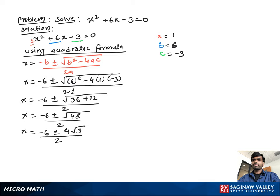As you see, we can take 2 as a common factor from both the numerator terms. So taking 2 as common, we get negative 3 plus or minus 2 times square root of 3, over 2. As you see, 2 divided by 2 will be 1, so we get negative 3 plus or minus 2 times square root of 3.